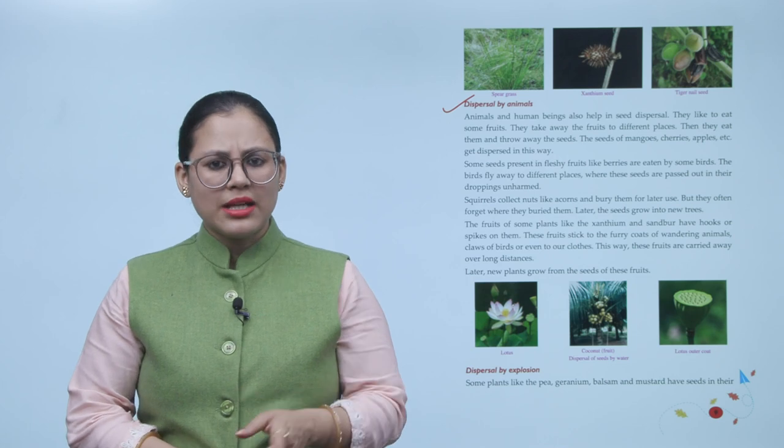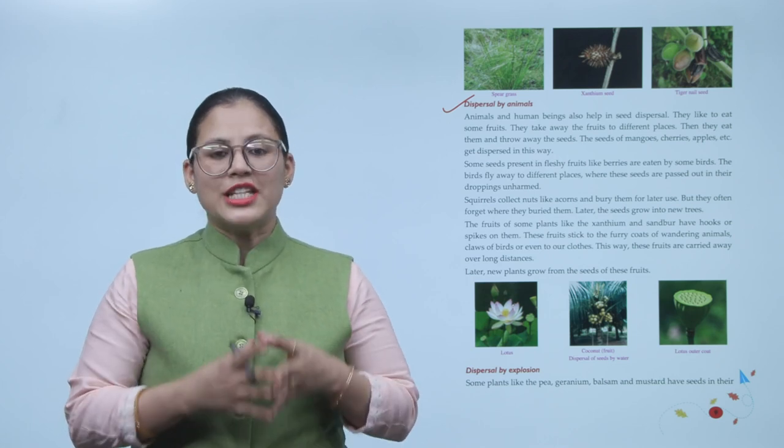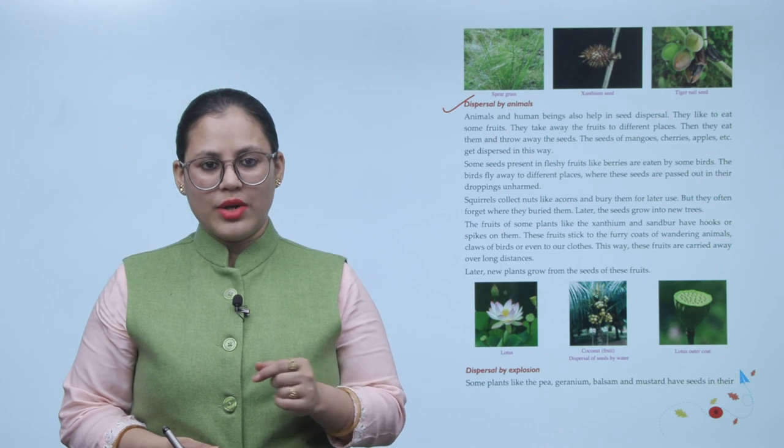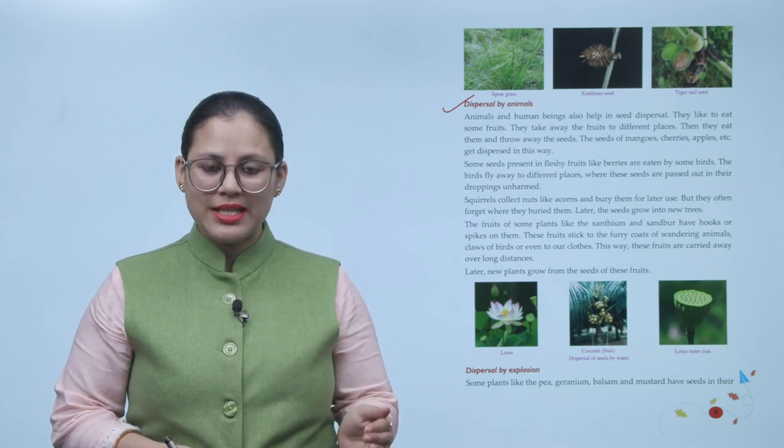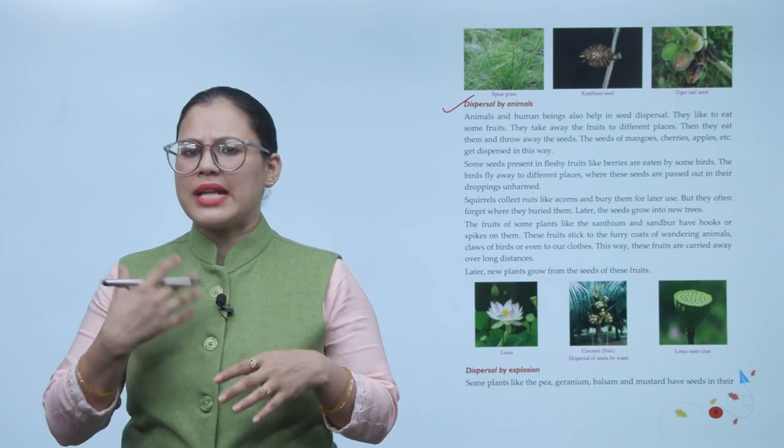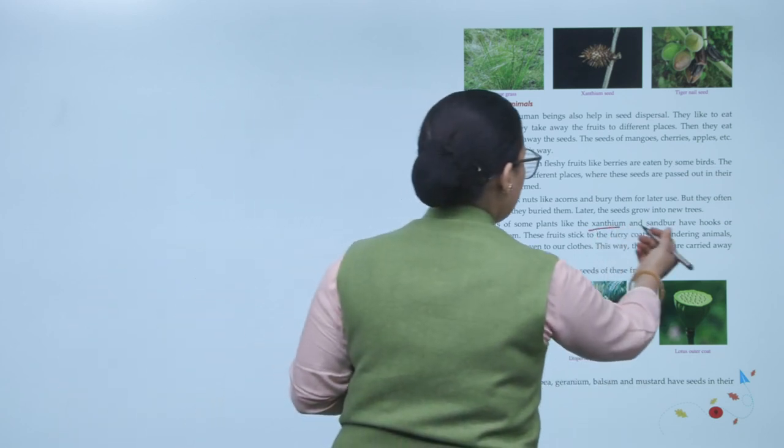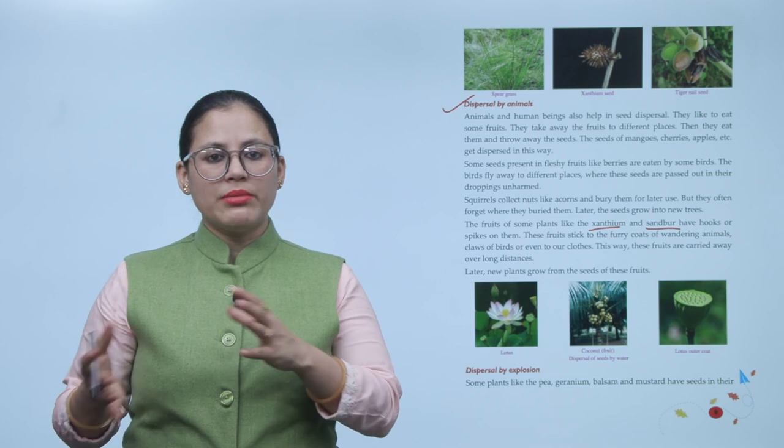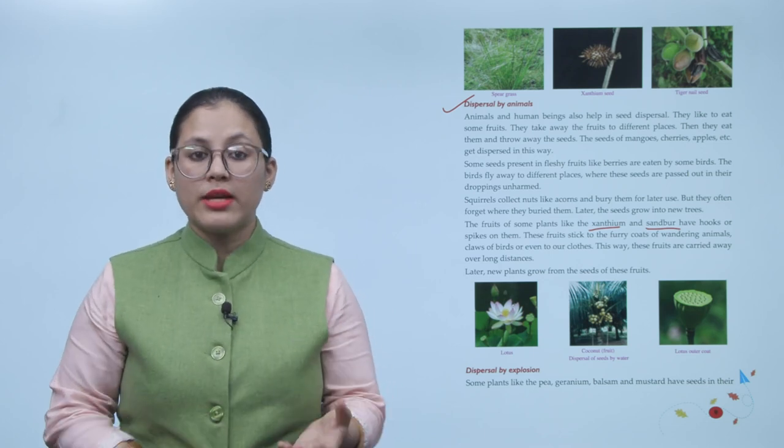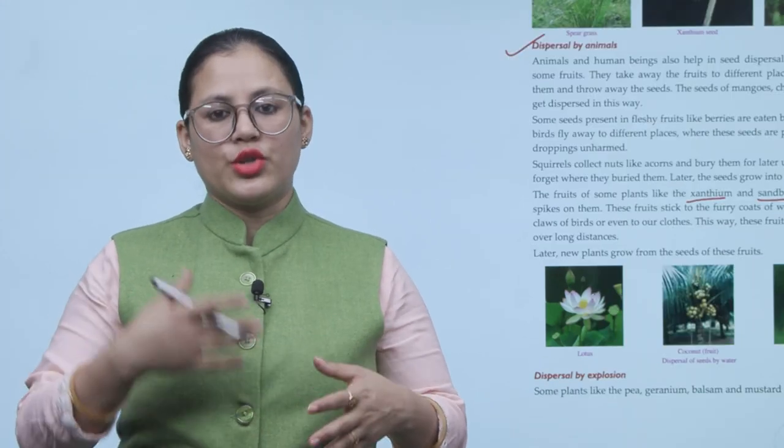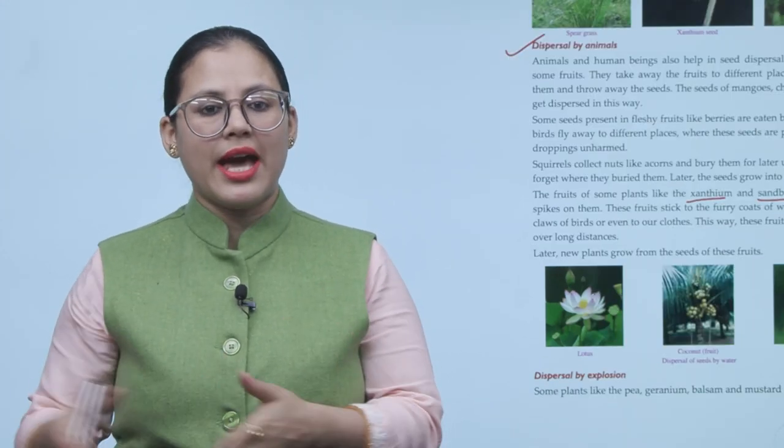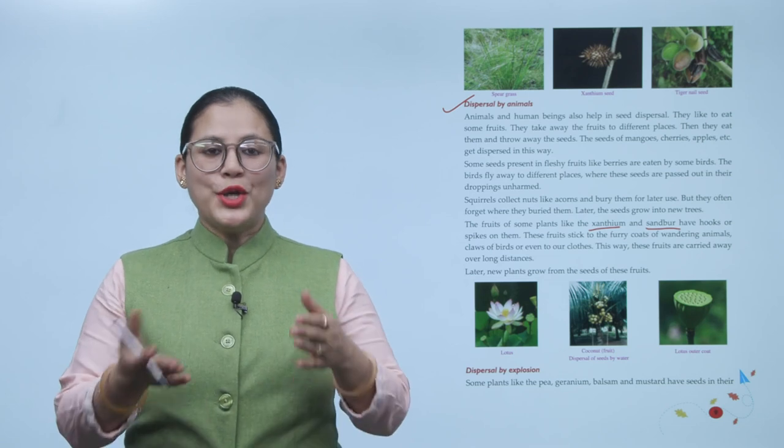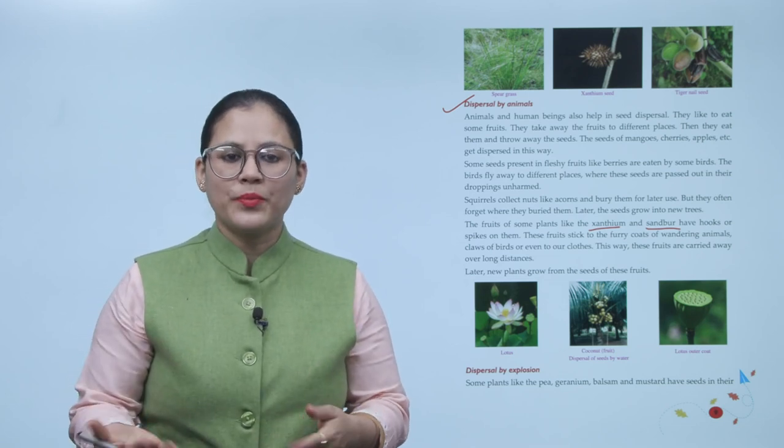The fruits of some plants like xanthium and sandbur have hooks or spikes on them. These fruits stick to the furry coats of wandering animals, claws of birds, and even to our clothes. This way these fruits are carried away over long distances. Later new plants grow from the seeds of these fruits.